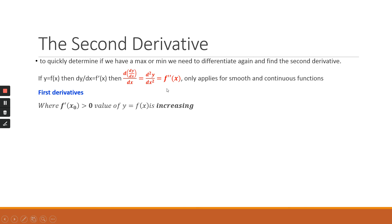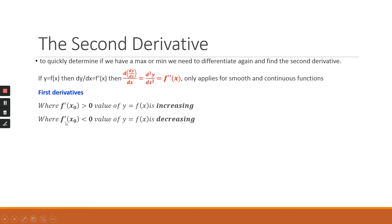The first derivative tells us the behavior at a specific point. If the first derivative is positive, the value of y on the function is increasing — that corresponds to the area between x1 and x2 from the previous slide. When the first derivative is negative, the y function is decreasing — that's when we're moving from point zero to x1.